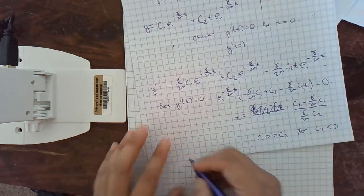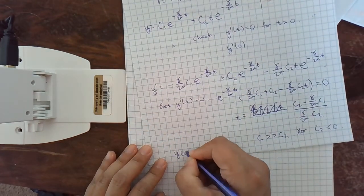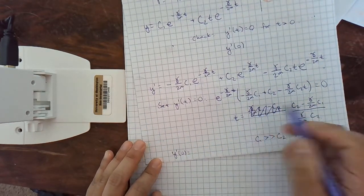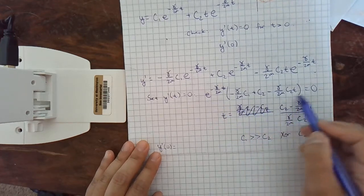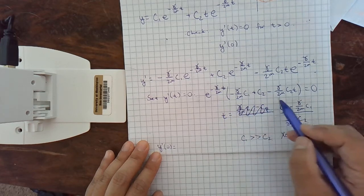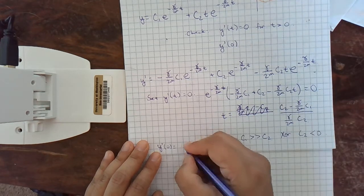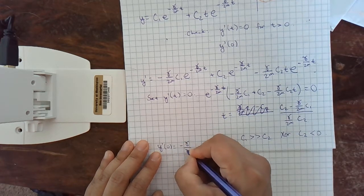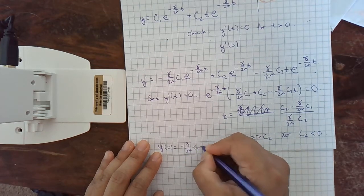Okay. And then let's look at y prime of 0. y prime of 0 is... So, we're going to put 0 into here. Well, this part is 1. This part is 0. So, it's negative gamma over 2m c1 plus c2.